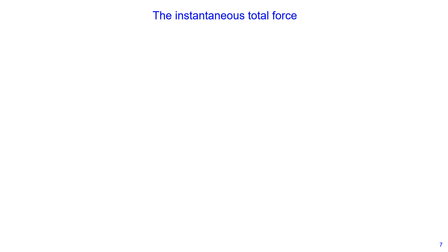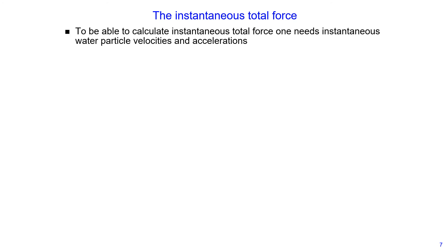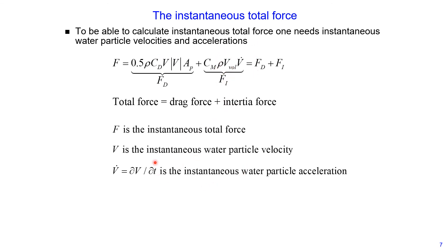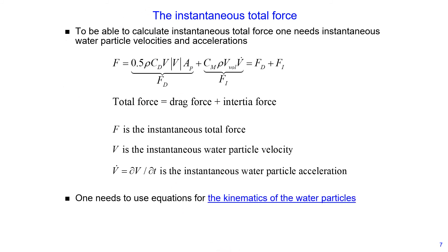To calculate the total instantaneous force acting on a structure, we also need to estimate instantaneous water particle velocities and accelerations — not only drag and inertia coefficients. In this equation, F is the total instantaneous wave-induced force, V is instantaneous water particle velocity, and V-dot is instantaneous water particle acceleration. We need equations for the kinematics of wave particles.